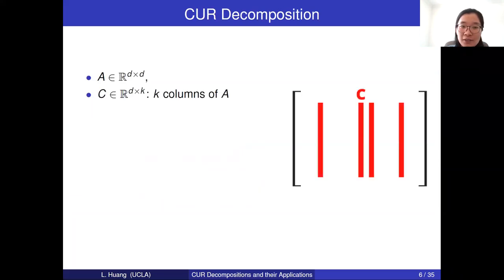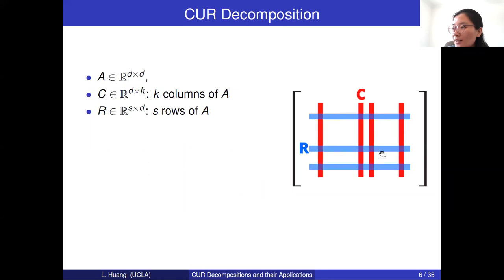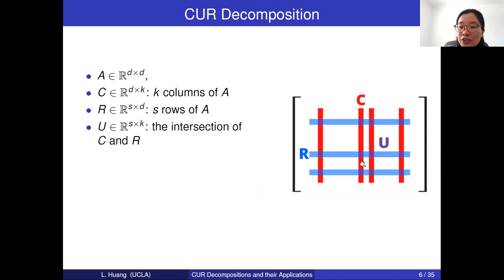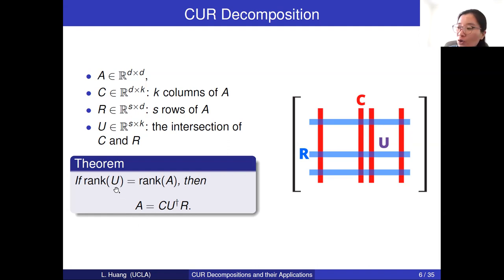For a given d-by-d matrix, we would like to select a sub-column matrix C, represented in red, and we also choose a sub-row matrix R, represented in blue. We set U to be the intersection between C and R, represented in purple. Then the CUR decomposition says we can represent A as the product of C, U-inverse, and R. If we want this representation to be exact, we need to make sure that the rank of U is equal to the rank of A.